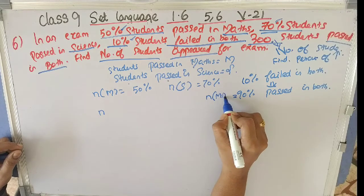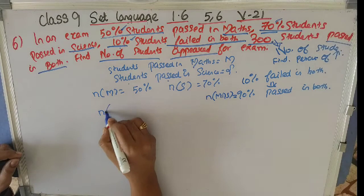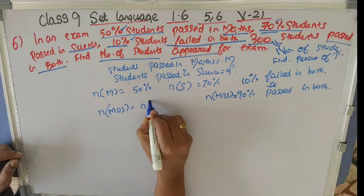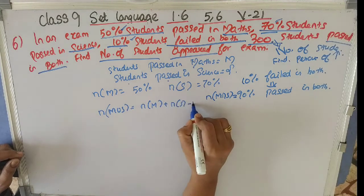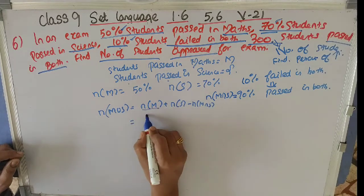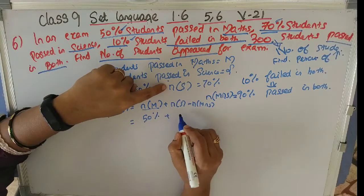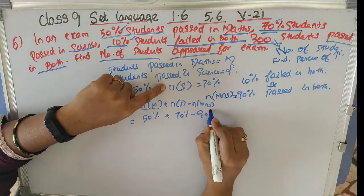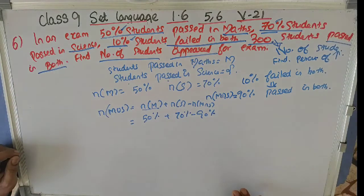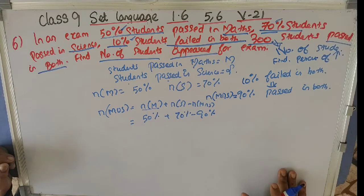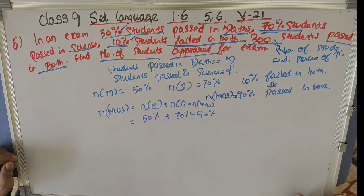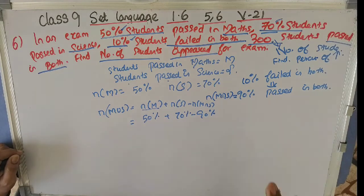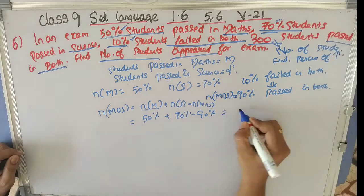So we have to find N of M union S. N(M∪S) = N(M) + N(S) − N(M∩S) = 50% + 70% − 90% = 120% − 90% = 30%. So N of M union S is 30%, meaning the number of students who passed in both maths and science is 30%.